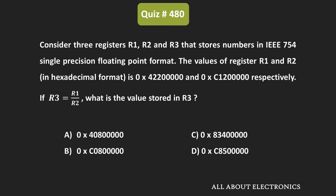Hey friends, welcome to the YouTube channel All About Electronics. In this question, we have been given that three registers R1, R2, and R3 are storing numbers in IEEE single precision format. We have also been given the values of registers R1 and R2 in hexadecimal format. Register R3 is equal to R1 divided by R2, and we have been asked to find the stored value in register R3.